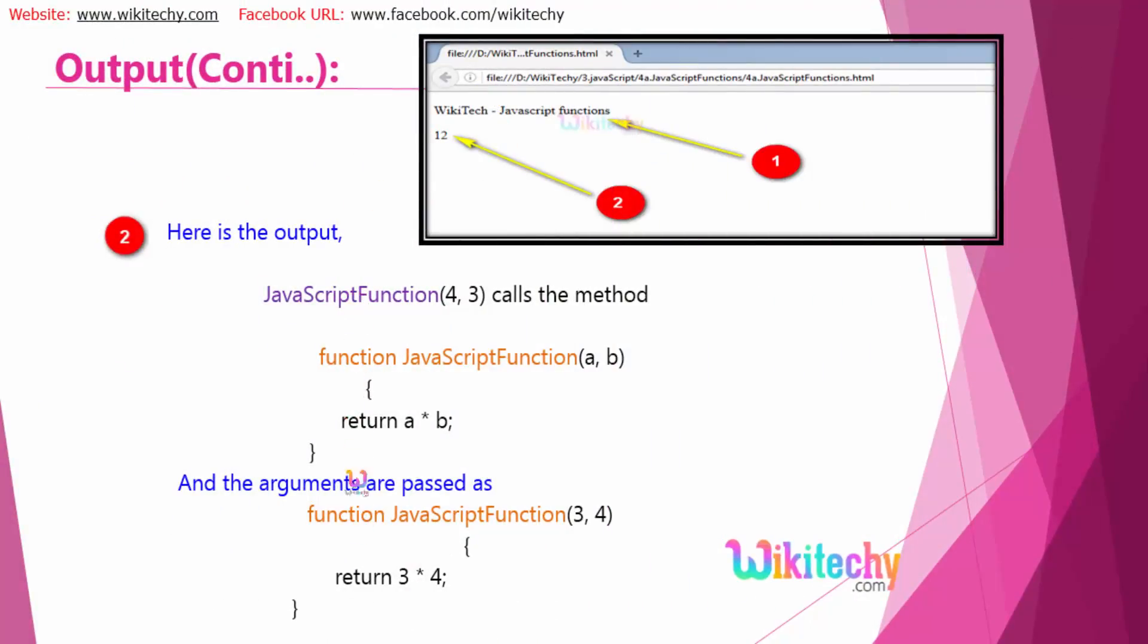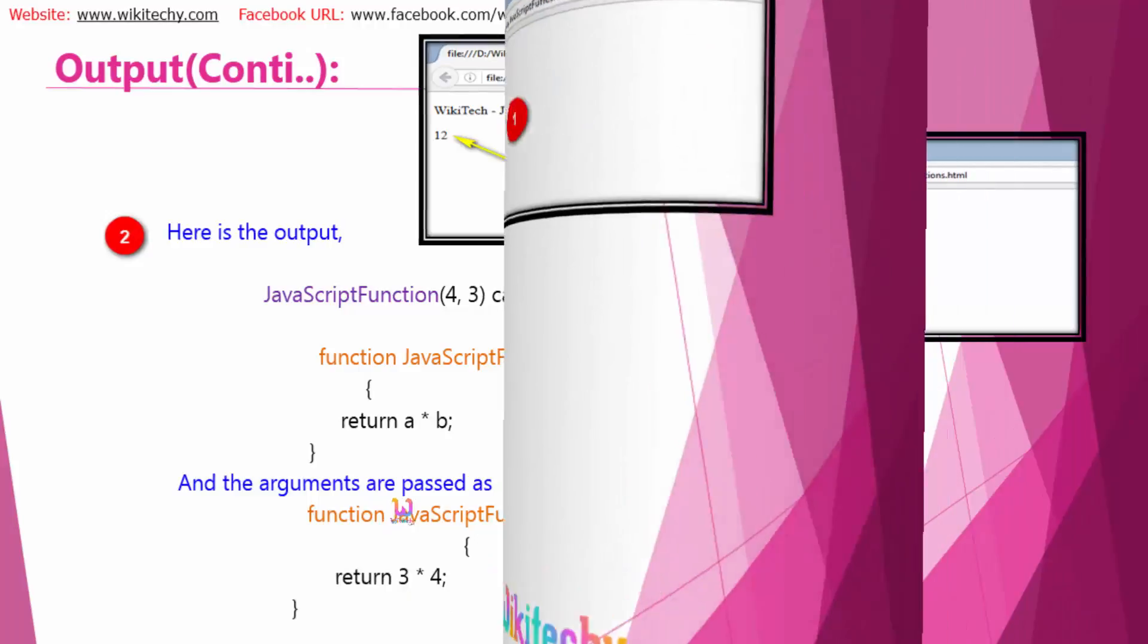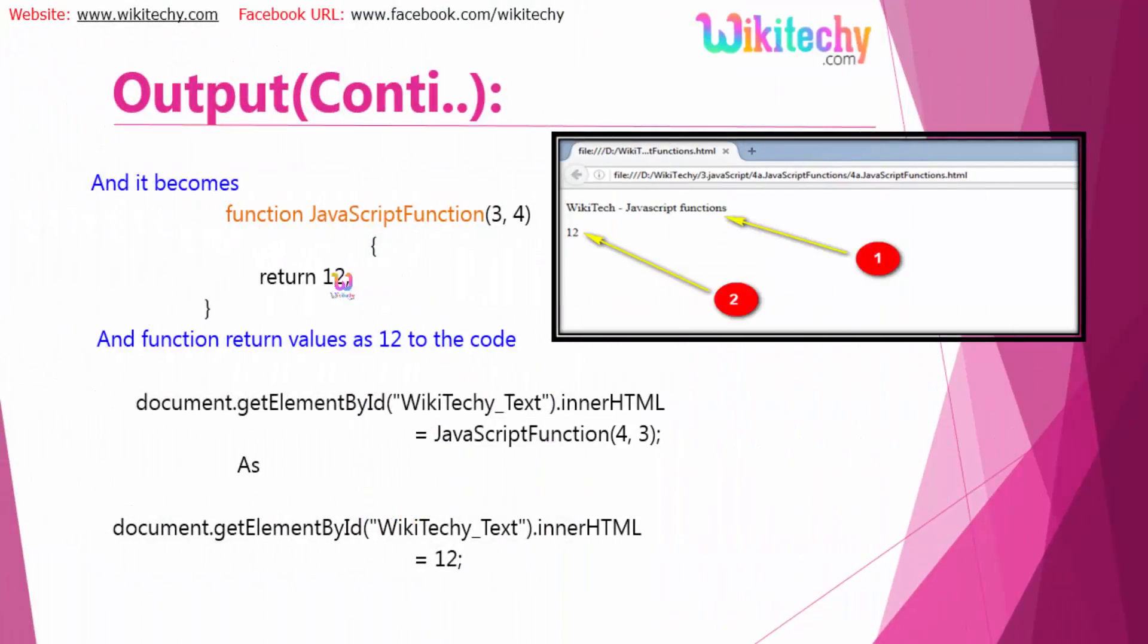I'm explaining the code. This is the JavaScript function which performs multiplication. 3 into 4, this is how it works and it will return the value 12. This is how the JavaScript function is, and it is assigned like this.